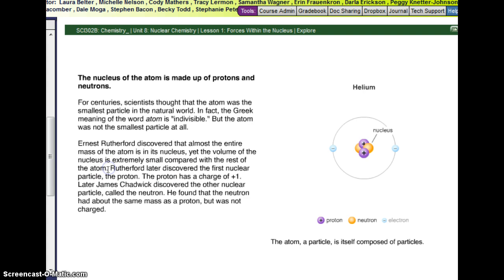Rutherford later discovered the first nuclear particle, the proton. The proton had a charge of plus one. Later, James Chadwick discovered the other nuclear particle called the neutron. He found that the neutron had about the same mass as a proton, but was not charged. The atom, a particle, is itself composed of even smaller particles.